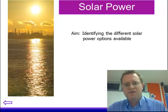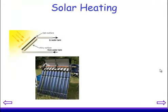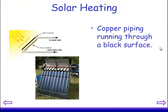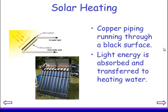So to start off with, my first example is basic solar heating. Solar heating is the simplest of the options. It's basically copper piping running through a black surface, and light energy is absorbed and transferred to heating the water. So that's one method which is available to you.